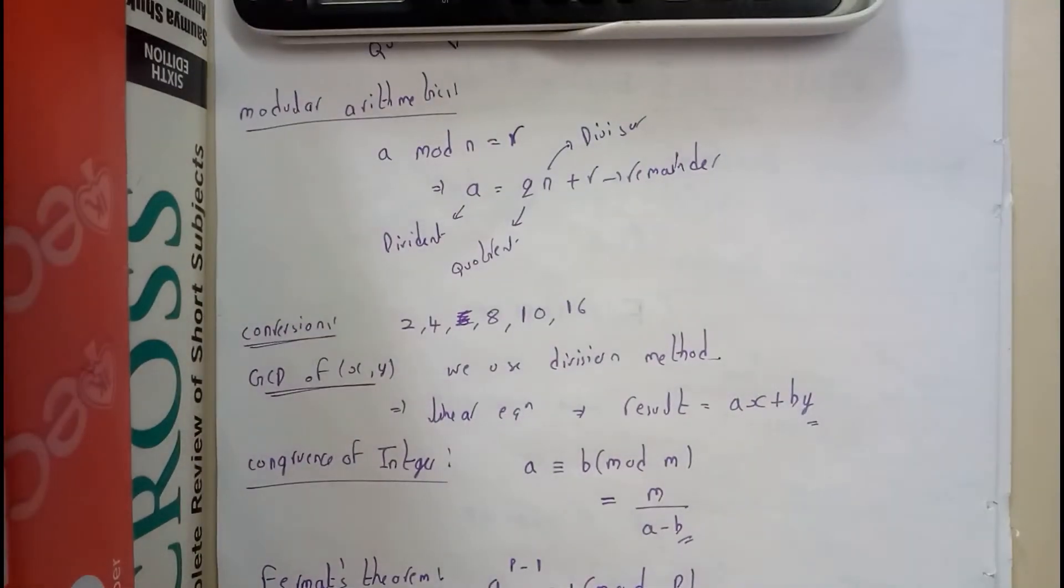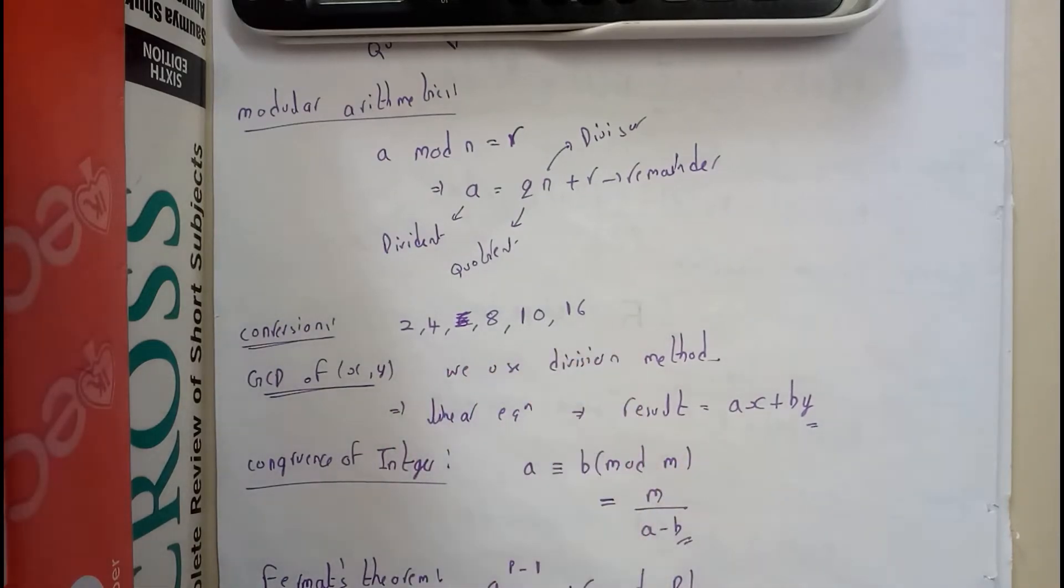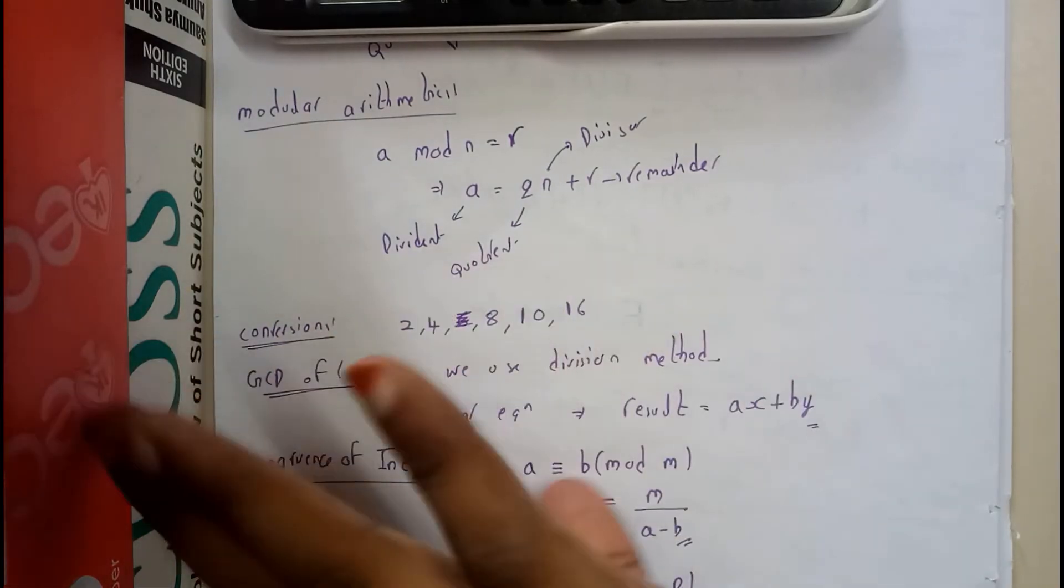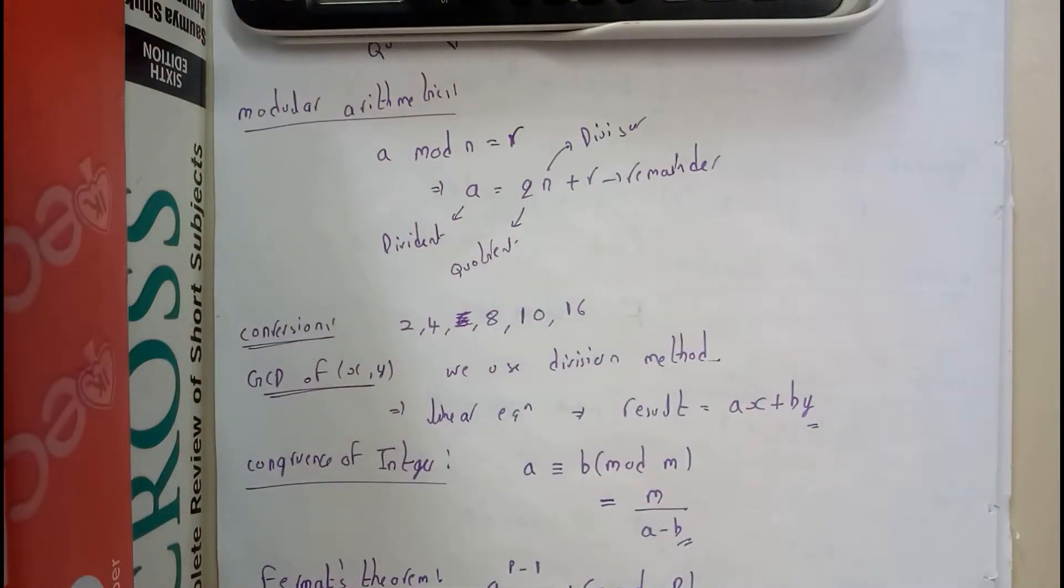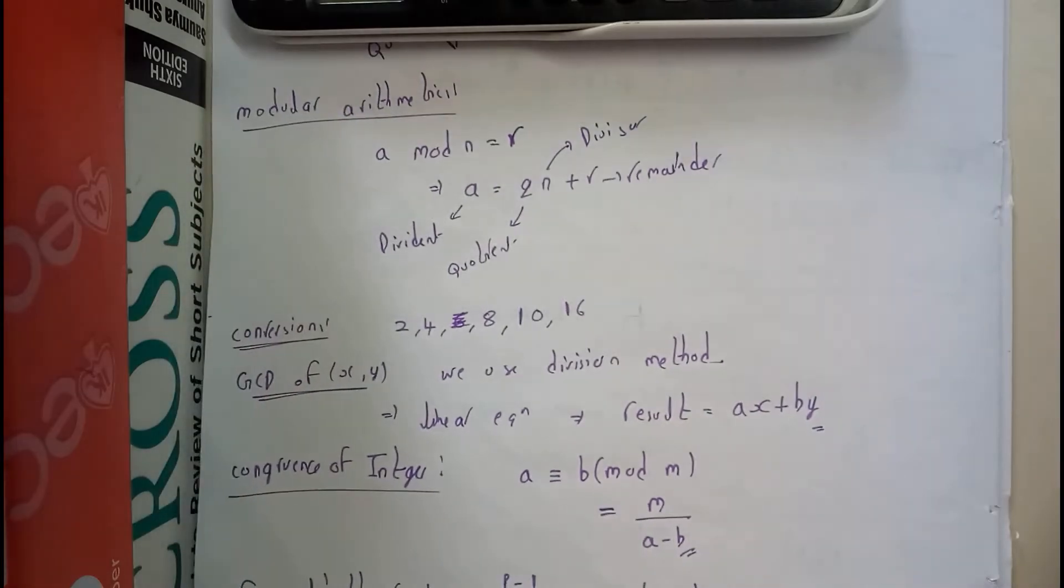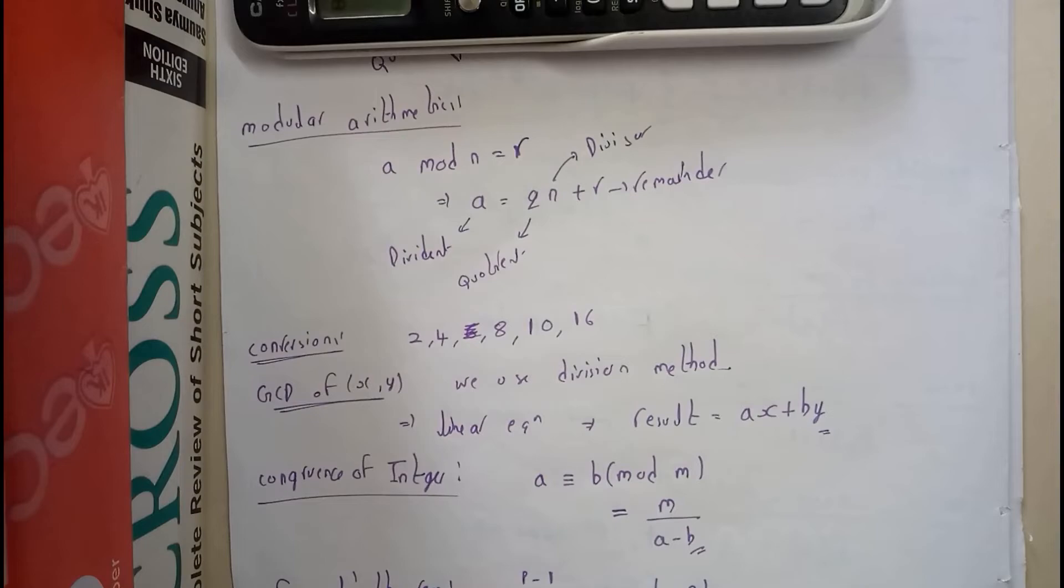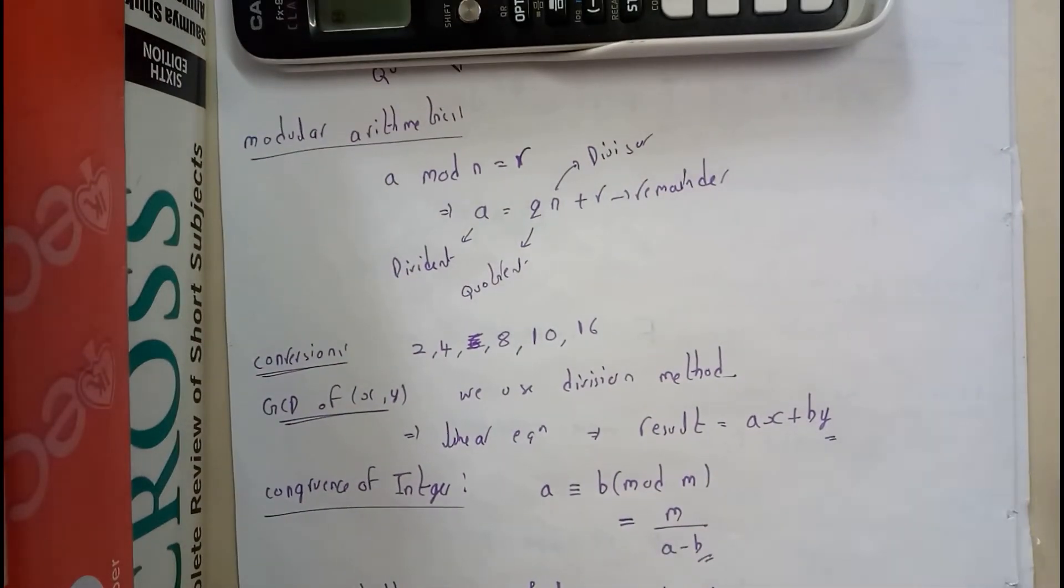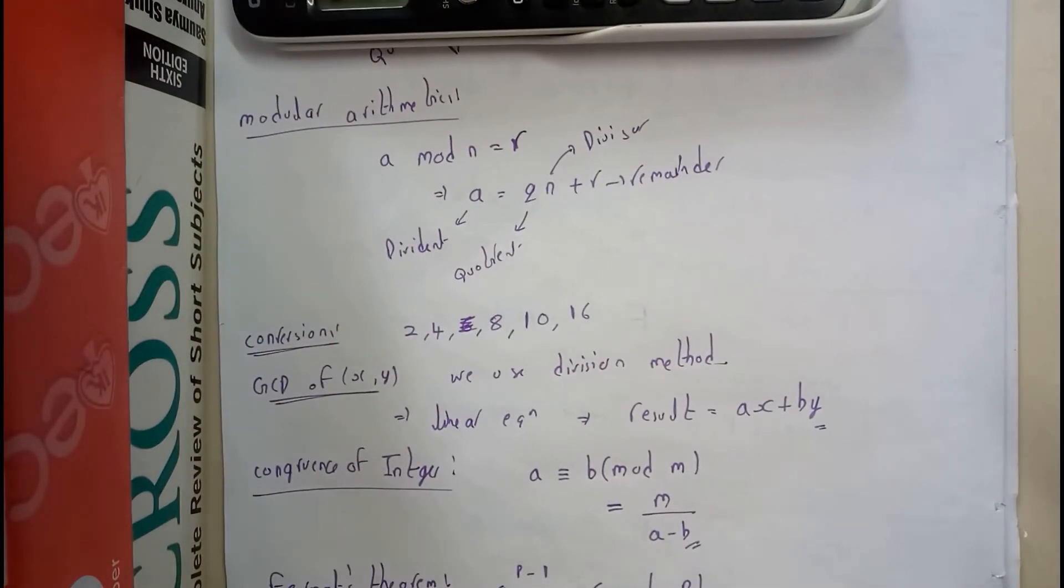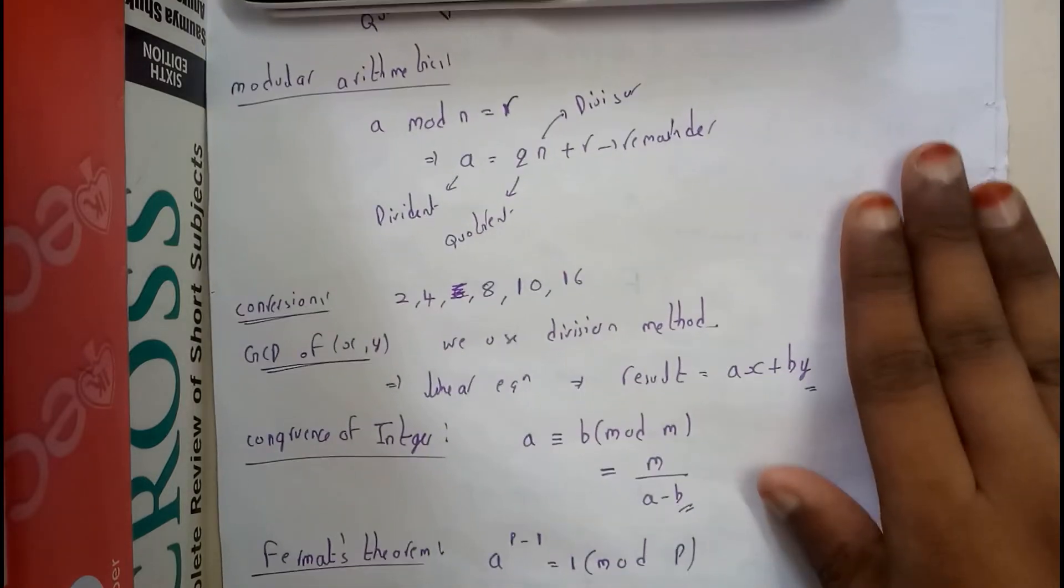In number systems, we learned about binary, base 4, base 8, base 10, and base 16. You need to learn about those conversions. If we're lucky, he'll give numbers to convert into base 2, base 8, base 16, and so on. It's possible for a five-mark question. There are some problems we have discussed.